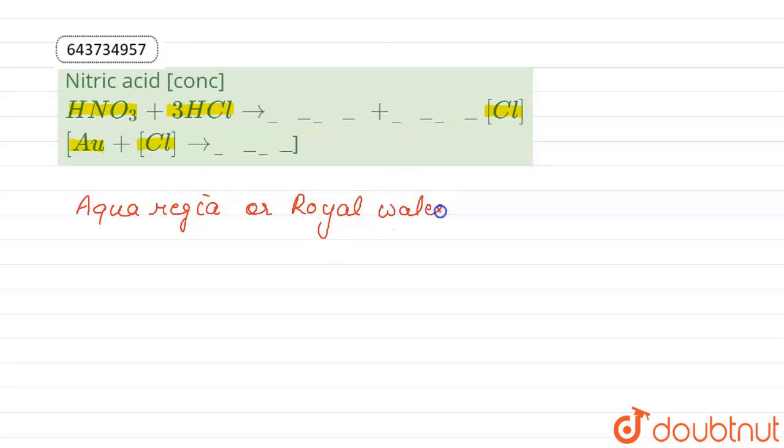react together, they produce NOCl with two moles of water and two nascent chlorine. Then this nascent chlorine reacts with gold to give compound.